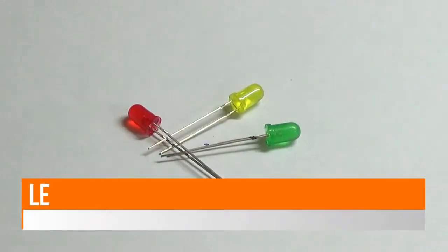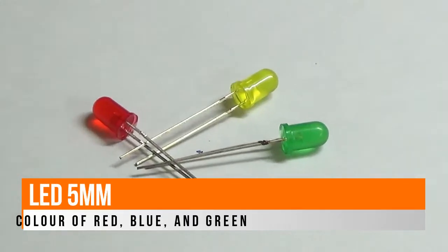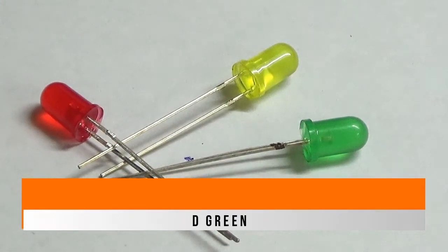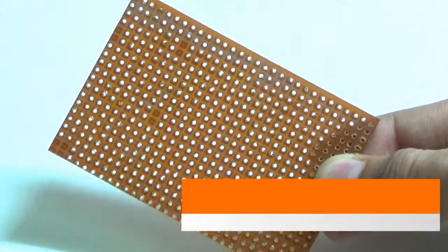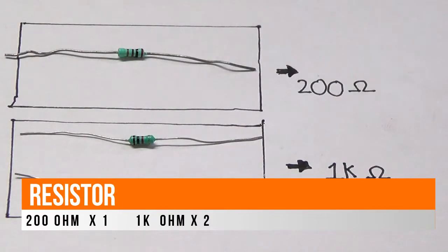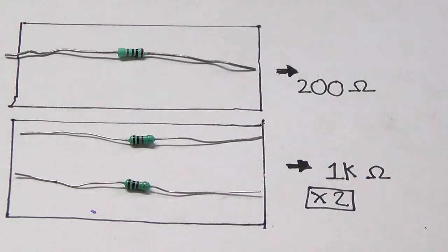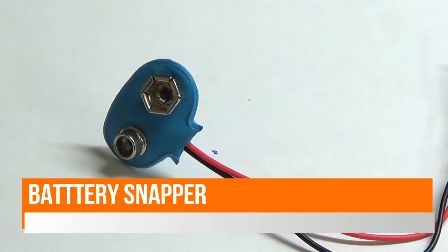For this build, you will need three color LEDs of red, yellow, and green respectively, a PCB, one resistor of 200 ohms and two resistors of 1 kilo-ohm, and a battery snapper.